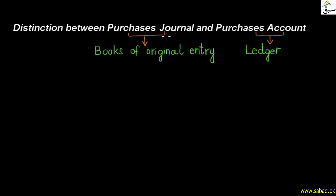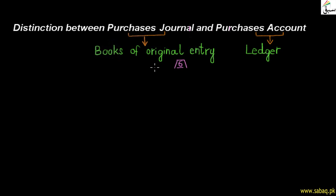What is a purchases journal? Purchases journal is a book of original entry. There are 6 different books of original entry: purchases journal, purchases return journal, sales journal, sales return journal, cash journal, and petty cash journal. We have a separate video covering all the details of books of original entry. The key point is that purchases journal is one of the books of original entry.